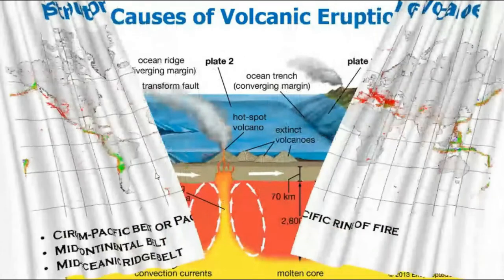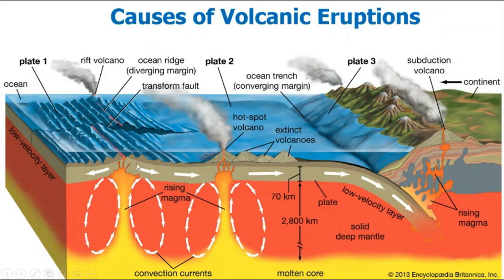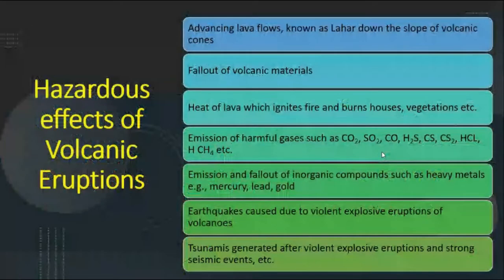Volcanic eruptions have two major causes. The first is tectonic plates — the fissure type of volcanic eruptions occurs where two plates meet and there is a vent at the hotspot. The second is when the mountain's central pipe is directly connected with the volcanic hotspot, linking directly to the mantle or core of the earth. These are the two types of causes of volcanic eruptions.